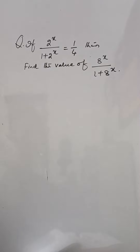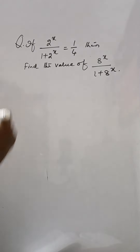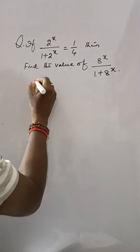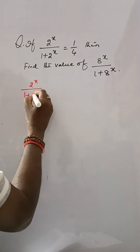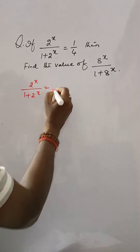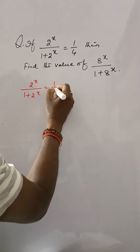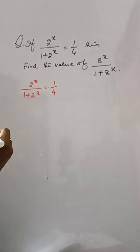If 2 to the power x divided by 1 plus 2 to the power x is equal to 1 by 4, then find the value of 8 to the power x whole divided by 1 plus 8 to the power x. From the question, 2 to the power x divided by 1 plus 2 to the power x is equal to 1 by 4.